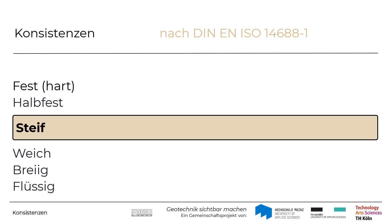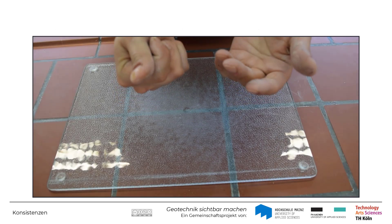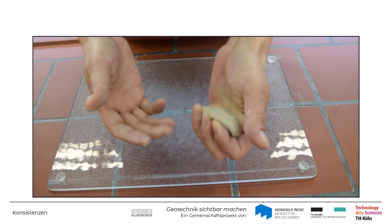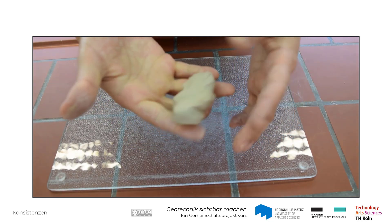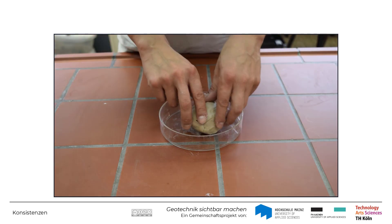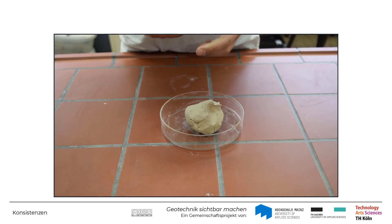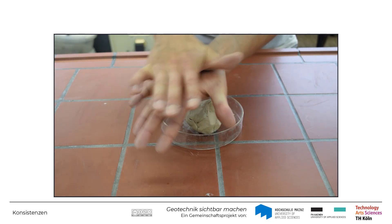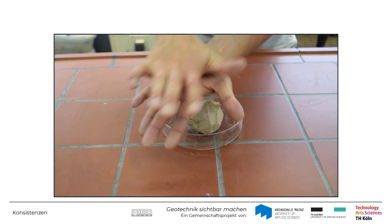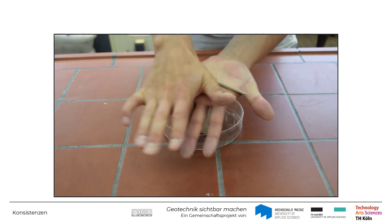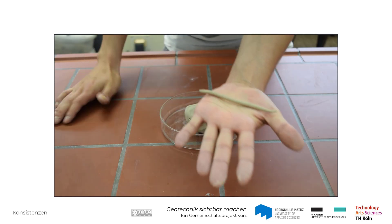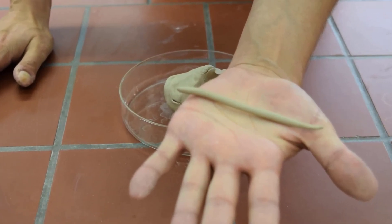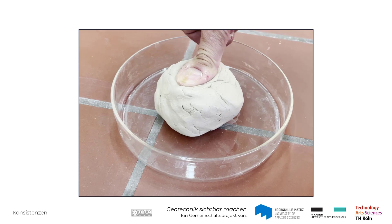Bei zunehmendem Wassergehalt geht der Boden in die steife Konsistenz über. Ein Boden dieser Konsistenz lässt sich nun plastisch verformen. Der Boden lässt sich zwar schwer kneten, aber es lassen sich in der Hand gut 3 mm dicke Walzen ausrollen. Diese reißen und zerbröckeln nicht. Der Daumen erzeugt leicht einen Eindruck.